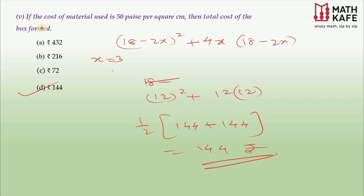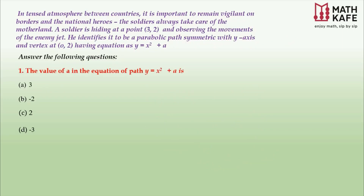Now let's consider one more question from Application of Derivatives. A soldier is hiding at point (3, 2) and observing the movements of an enemy jet. He identifies its path as parabolic, symmetric with the y-axis and vertex at (0, 2), having equation y = x² + a. The first question asks for the value of a in the equation.